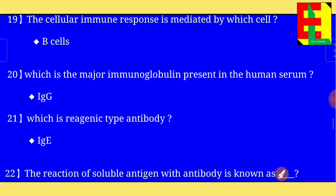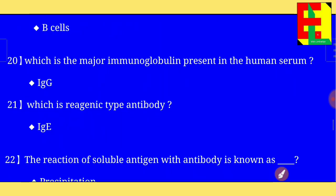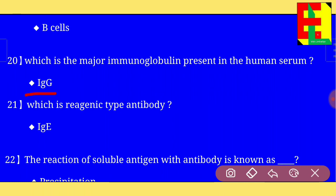Question number twenty: which is the major immunoglobulin present in human serum? The right answer is IgG is the major immunoglobulin present in human serum.